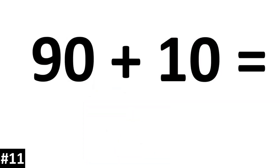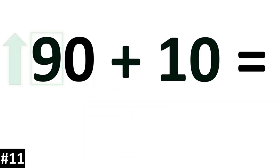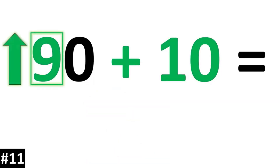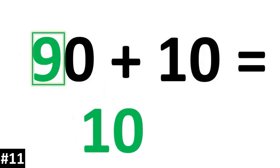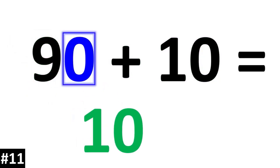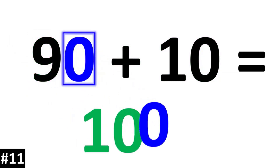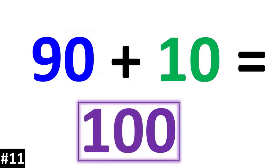90 plus 10: the tens digit is going to go up by 1, so the 9 is going to become a 10. And the zero as the ones digit stays the same. 90 plus 10 is 100.